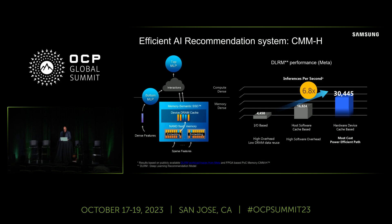Looking at outcomes of the CMMH for an AI recommendation system: with an IO-based system, we get almost 5,000 inferences per second. Moving to a host-based software approach with caching local to the host, we've quadrupled that to almost 17,000 inferences per second. But applying the CMMH topology — combining compute density and memory density together and complementing the host with this caching device — we achieve almost 7x performance versus the IO-based solution.